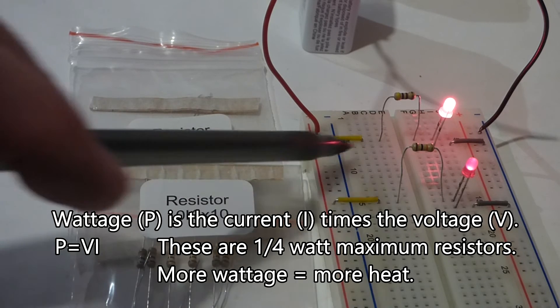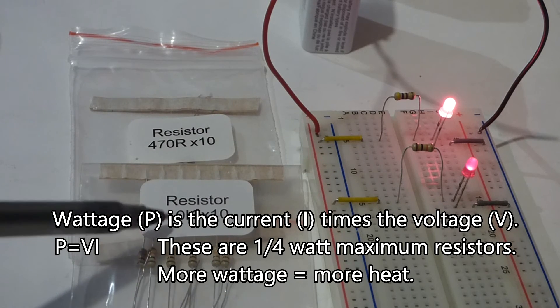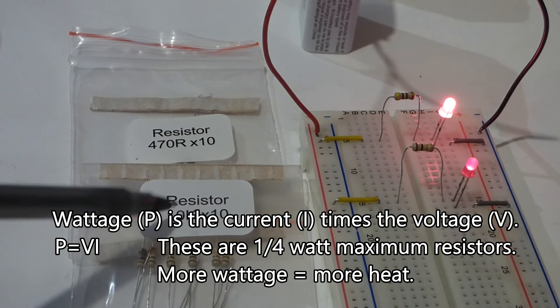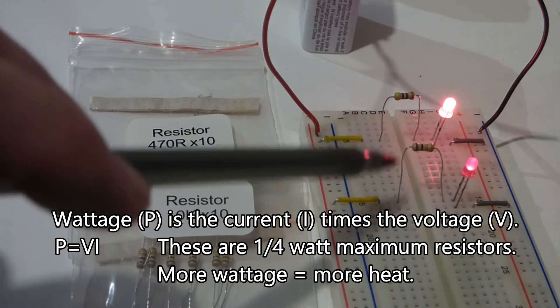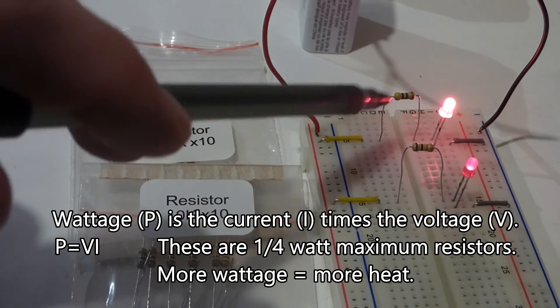These both have 9 volts so as far as these two resistors go, this has about 1/20th of the current going through. So this resistor will stay a lot cooler than that one. This one's going to get hotter.